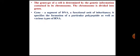We need to understand what is the meaning of a gene. A gene is a segment of DNA and it is a functional unit of inheritance. Whenever we say inheritance, there is transfer of DNA from the parent cell to the progeny or daughter cells. This gene specifies the information for a particular polypeptide as well as various types of RNA. A gene is a segment of DNA that codes for a particular protein or a particular type of RNA.